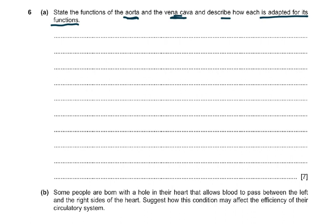For the vena cava: it carries deoxygenated blood from the body to the right atrium. It has thin walls, a wide lumen, and carries blood at low pressure. There are valves present in the veins — especially in the leg veins — to prevent backflow of blood. You needed any seven of these points to get full marks.